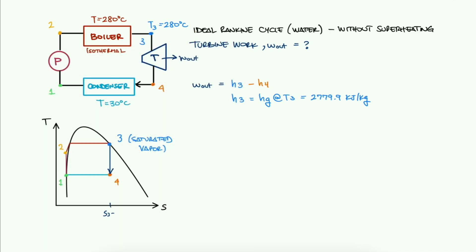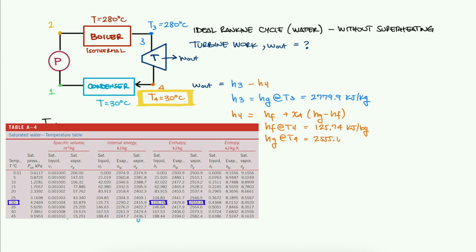Now, we know that if 3 is a saturated vapor, 4 is a saturated mixture. Therefore, to calculate H4, we will need the quality at 4 and the values for Hf and Hg at T4, which is the temperature of the condenser. We find these in our tables.